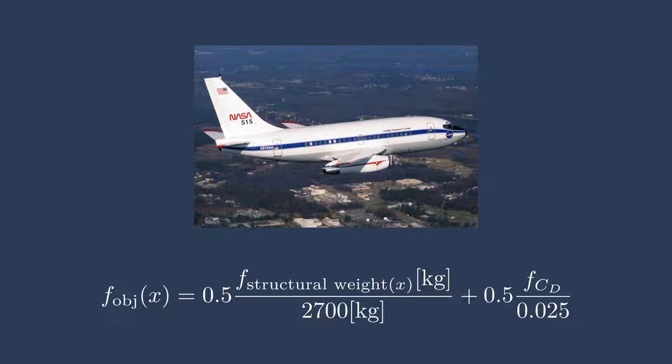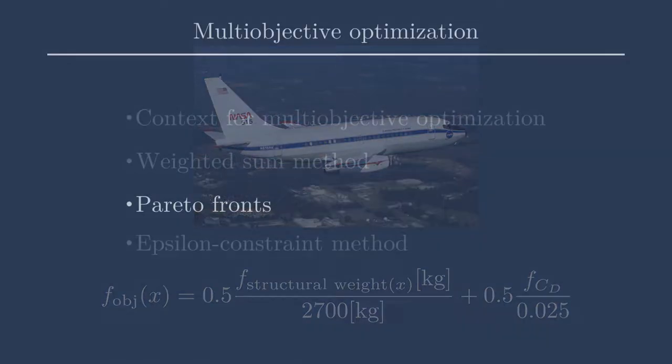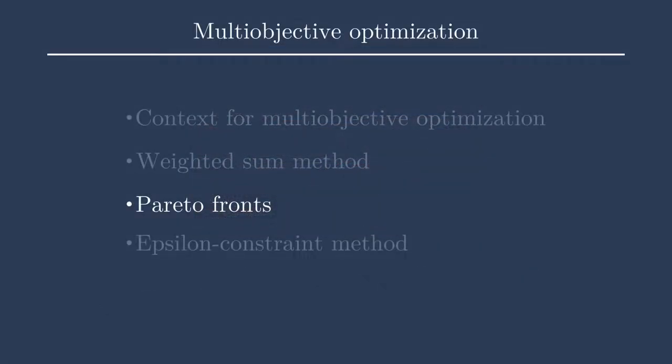Additionally, for these examples, we're only talking about bi-objective optimization. However, this can be extended to n-objective optimization in the multi-objective optimization sense. Now that we've established the weighted sum method, let's go on to the Pareto fronts, or Pareto frontiers.